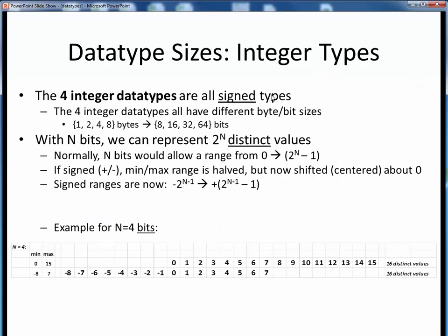All four of Java's integer data types are signed types of different byte sizes: one, two, four, or eight bytes. Recall from an earlier CS intro class that with n bits of data, we can represent 2^n distinct values, over the range from zero up to, but not including, 2^n. But now, if we decide to allow for signed numbers also, what happens is we cut the min-max range in half, but shift it so that it's now centered about zero.